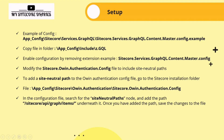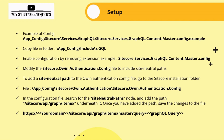There is another file — Sitecore.Owin.Authentication.config — which has a node called SiteNeutralPaths. You need to add Sitecore/api/graph/items/master underneath it. Once saved, you can access your GraphQL queries at: your-domain/sitecore/api/graph/items/master?query= followed by your GraphQL query. It also provides a GraphiQL tool. These are the simple configuration changes required — a demo will be shown in a later video.